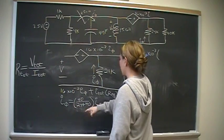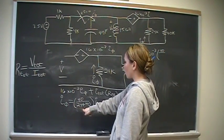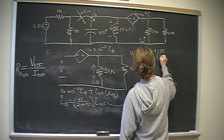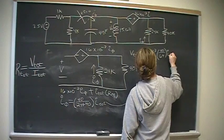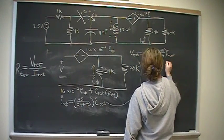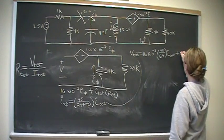V total is equal to 16 times 10 to the negative third times I sub V. Substitute that in. 40 over 24 plus 40, 64.